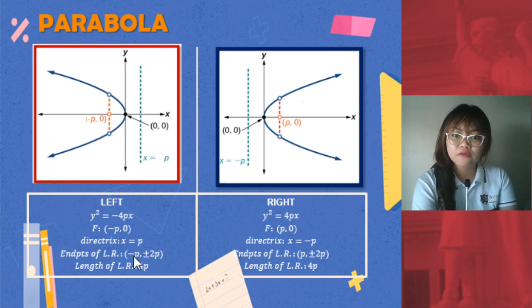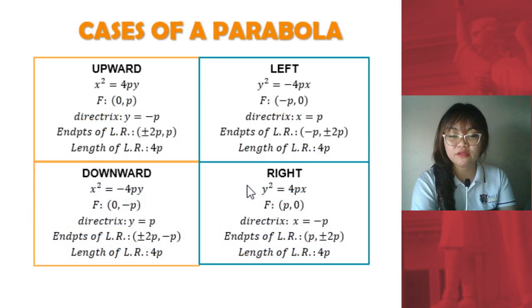So for the left, parabola opening to the left, we have (-p, ±2p). Why? Because we have reflection here and here. We just substitute the value of p that we get from the standard form of equation. And then the length of our latus rectum is always 4p.